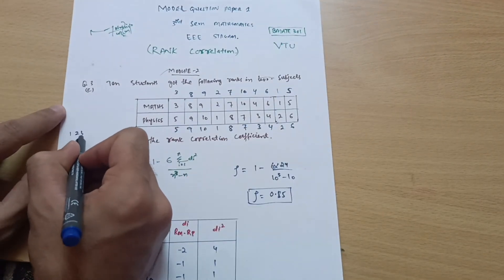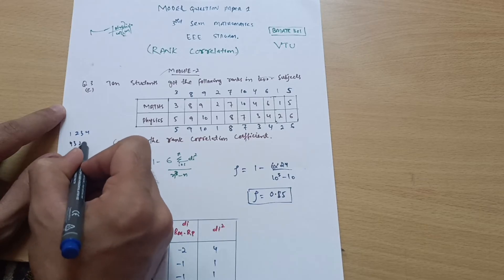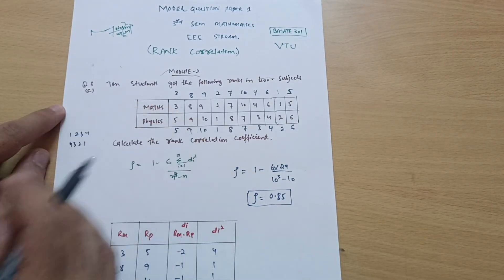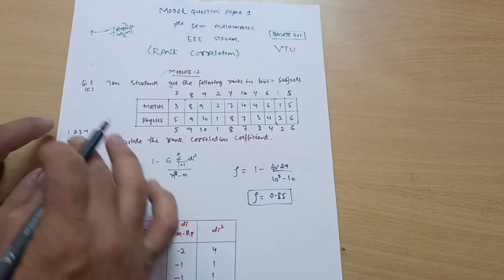Taking the highest number first, then the next number, which is minimum. That is ascending order and descending order. Now check which is the minimum number. That is 1, so assign the rank as 1.